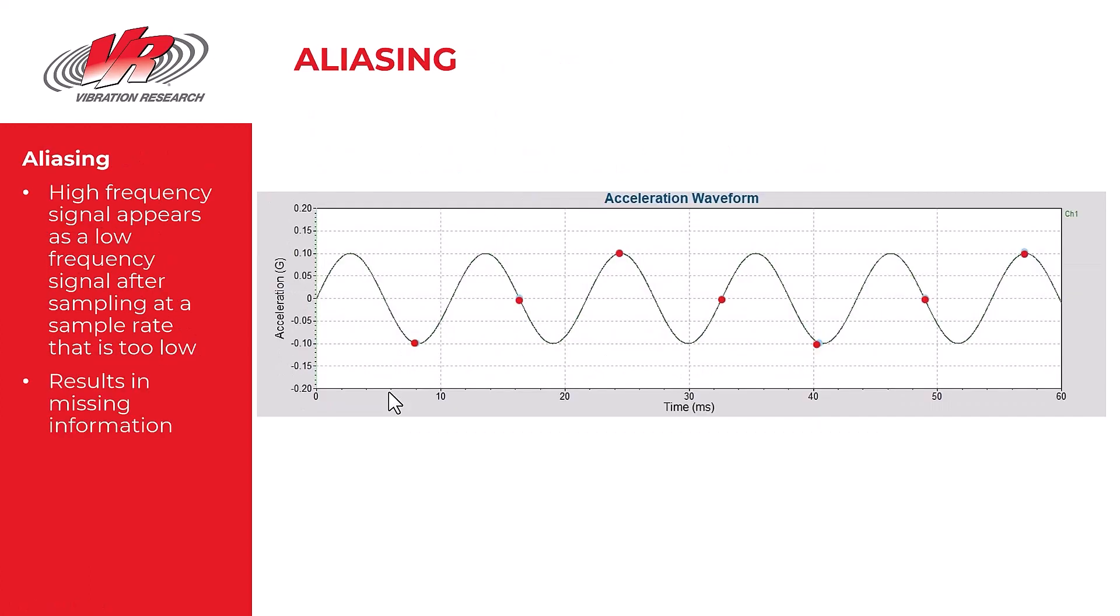In fact, one problem that arises is called aliasing. In the case where we sampled at too low of a sample rate, the five hertz signal represented in green here was represented, if I would have connected these points, by a 1.5 hertz signal. Whenever a higher frequency signal is represented by a lower frequency signal because of a low sample rate, you have a situation called aliasing.